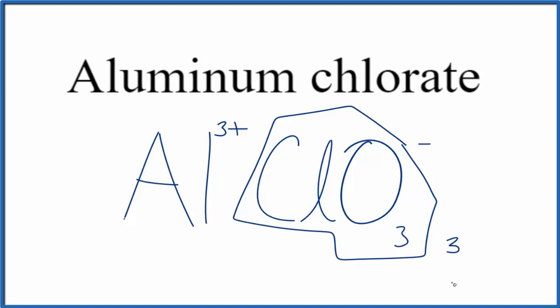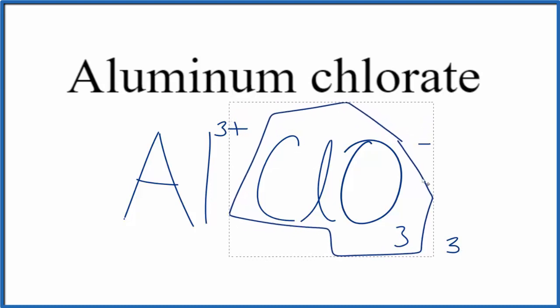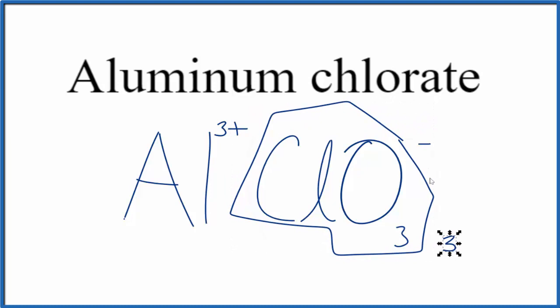If we put a 3 out here, now we have 3 times the 1- on this whole thing, which would balance out the 3+. We need to use parentheses here since we have three chlorate ions.